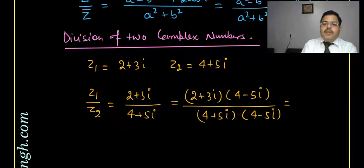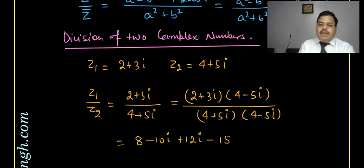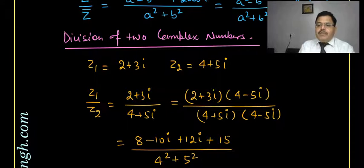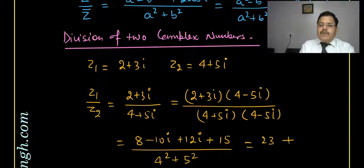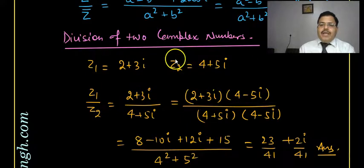What will come? 2 times 4 is 8, 2 times minus 5 iota is minus 10 iota, 3 iota times 4 is 12 iota, and 3 iota times minus 5 iota is minus 15 iota squared — which is plus 15. Using a plus iota b times a minus iota b equals a squared plus b squared for denominator: 15 plus 8 is 23, 12 iota minus 10 iota is 2 iota, divided by 16 plus 25 which is 41. So z1 upon z2 equals 23 upon 41 plus 2 upon 41 iota.